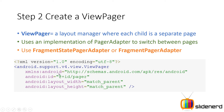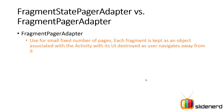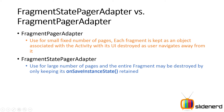What is the difference between the FragmentStatePagerAdapter and the FragmentPagerAdapter? For the FragmentPagerAdapter, use it when you have a small fixed number of pages. What happens when you switch between fragments is that each fragment is kept as an object associated with the activity, but its UI is completely destroyed. In the next video when I show you the working example, I will show you exactly what happens in the lifecycle of a fragment when we use a FragmentPagerAdapter and when we use a FragmentStatePagerAdapter, so you can clearly see the difference between both adapters.